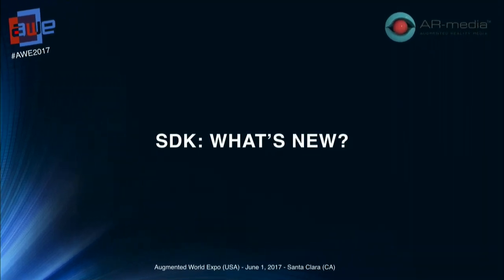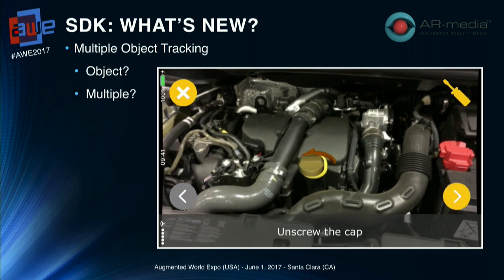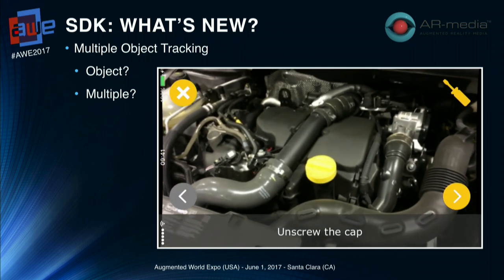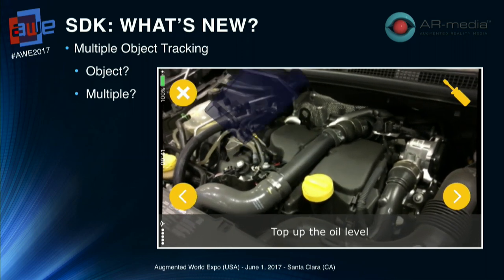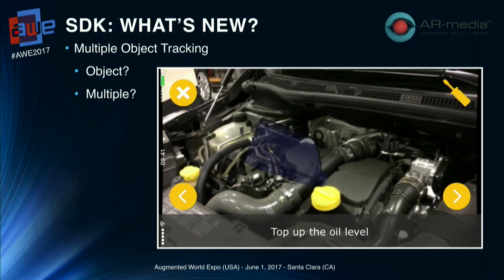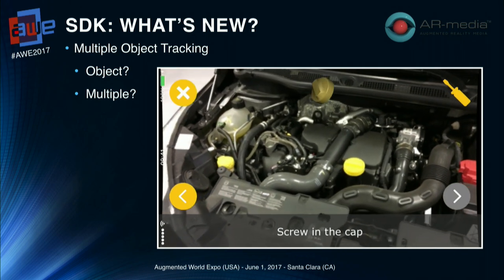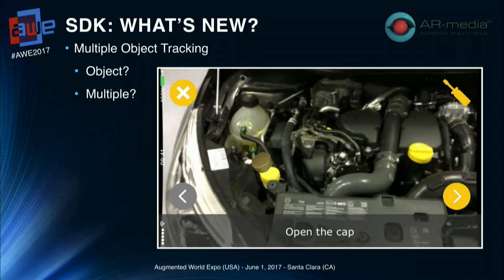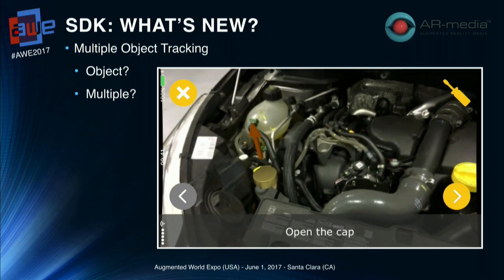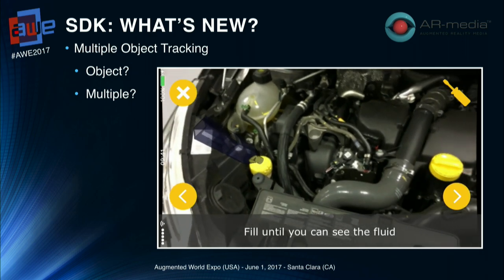Let me focus now on the very latest features we have added — basically, the multiple object tracking feature. First of all, what is object tracking? It relates to recognition and tracking of a 3D object, not a planar image, so the object itself becomes the marker in a way. Multiple means you can track and recognize several parts of the same object at the same time, or several different objects. The number of objects you can track depends on the computational power of your mobile device.